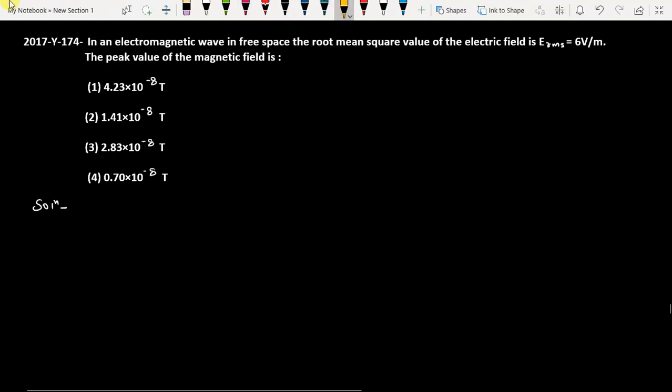This question is from ME 2017 paper, code Y, question 174. In an electromagnetic wave in free space, the root mean square value of the electric field E_rms is 6 volt per meter. The peak value of the magnetic field is...